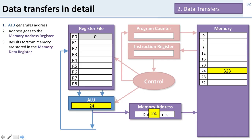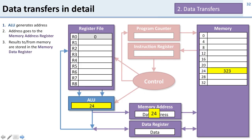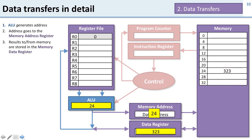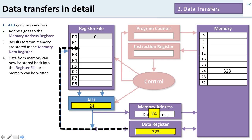We also need a place to store results that are coming to or from the memory, and that's going to be a data register. This is where the data is going to go back and forth. If we're using that address to access memory, we can put the data we got into that register, and then write it back into the register file. So we've added two things: a memory address register and a data register.